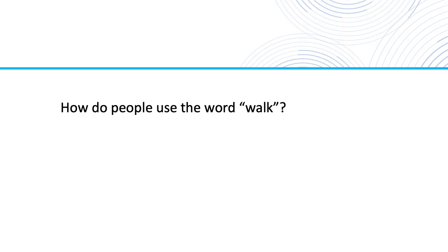For example, in a grammar book, students might learn the verb 'walk' is an intransitive verb. But that's not the whole story. Students won't always see it used as an intransitive verb in English. So the question arises: how do people use the word 'walk'?